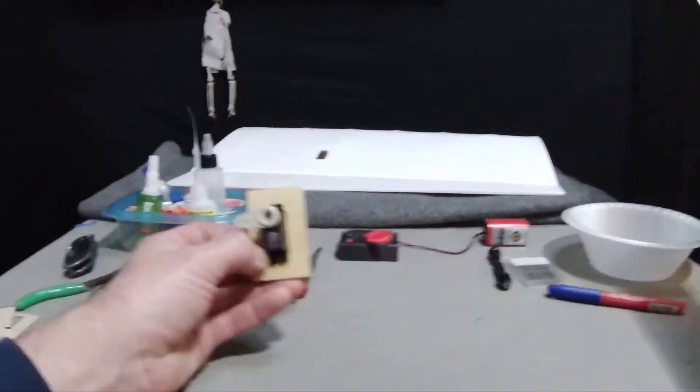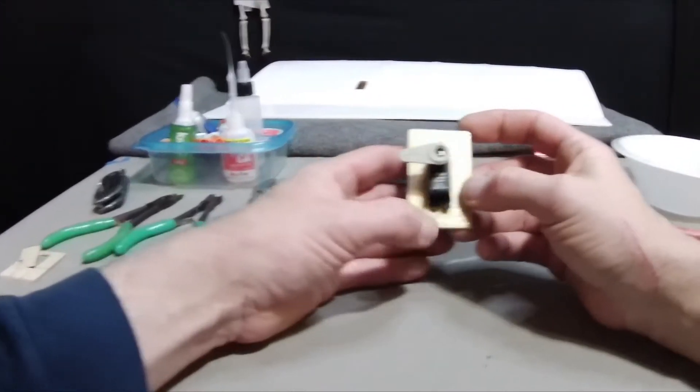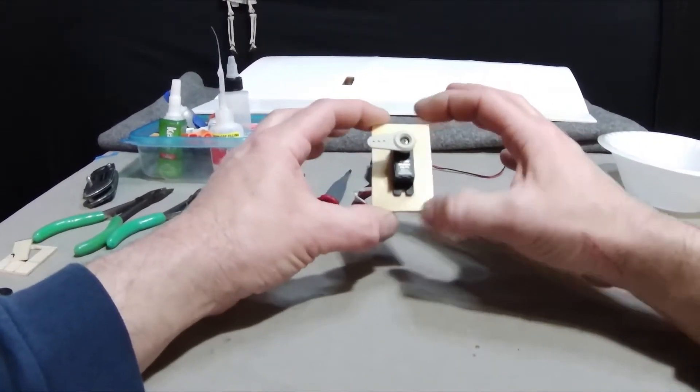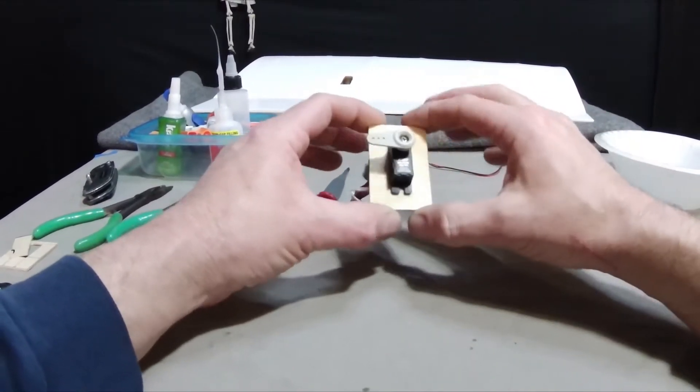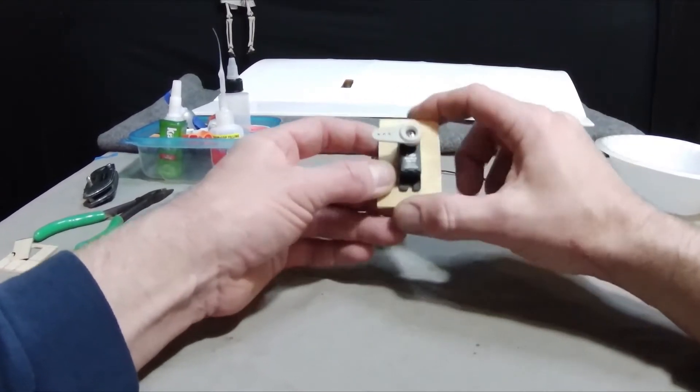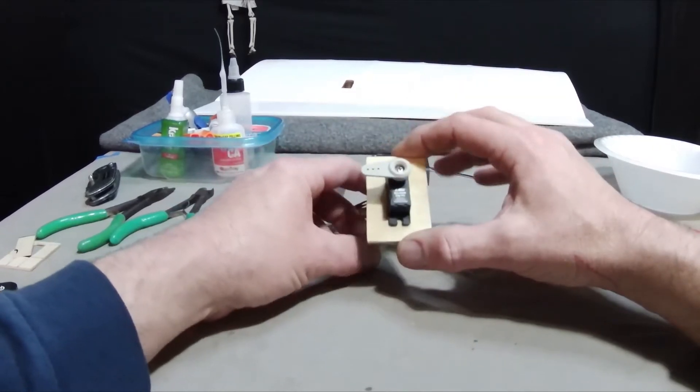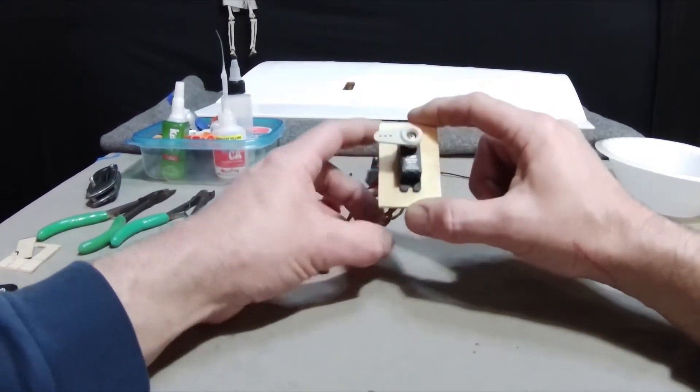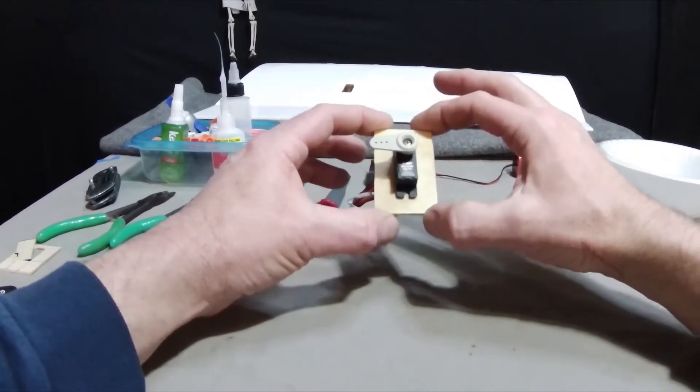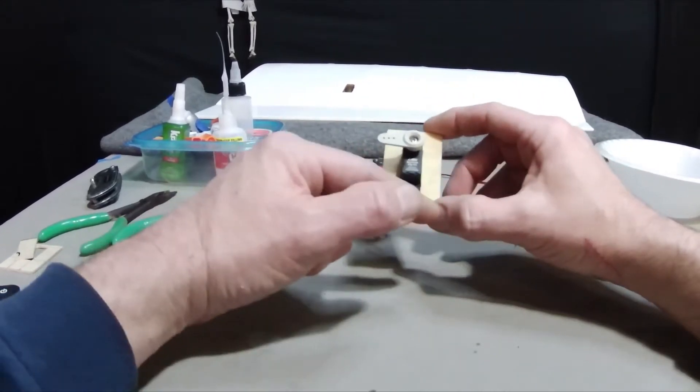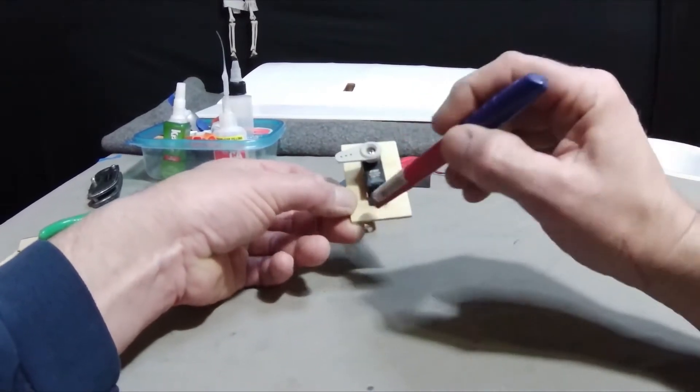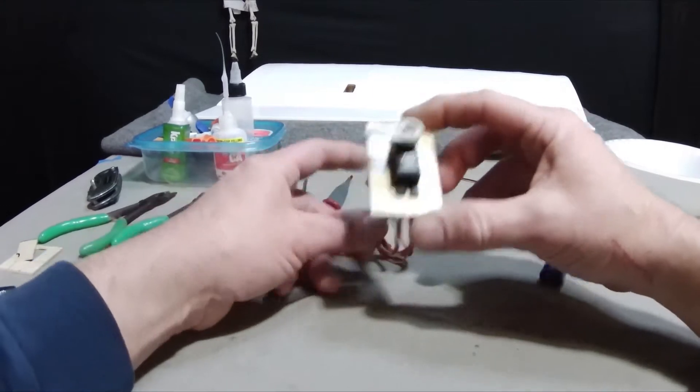First thing I'm going to do is kind of center this over that hole, get an idea, and then we'll mount the servo in this adapter plate we made, and then we'll mount this adapter plate to the wing after we get it all installed and screwed in. Then we'll take a look at our shape here, and maybe we'll round these corners off a little bit or dress it up a little bit.